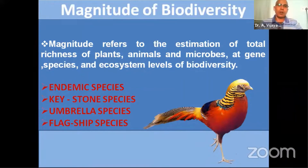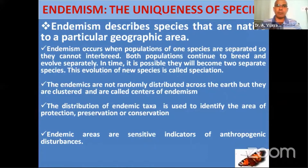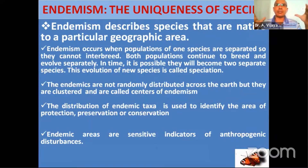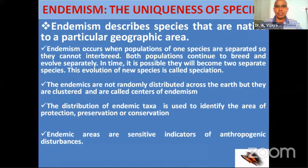Endemic species are confined to a particular locality — the species cannot be found anywhere else, which is what makes it endemic. Endemism occurs when populations of one species are separated so they cannot interbreed. Barriers restrict that species to stay in that locality, preventing expansion, so they remain confined to that restricted environment. These are called endemic species.